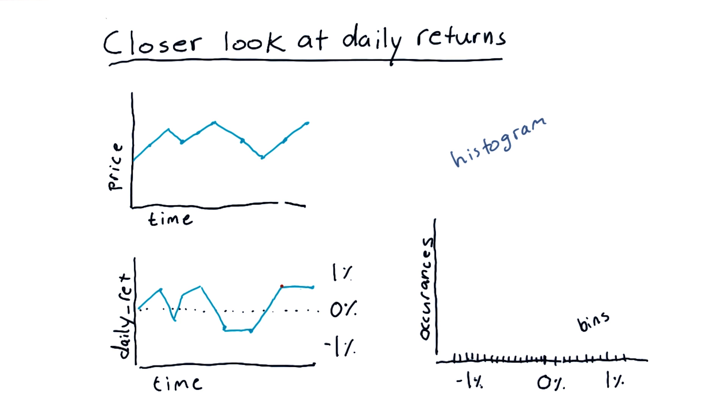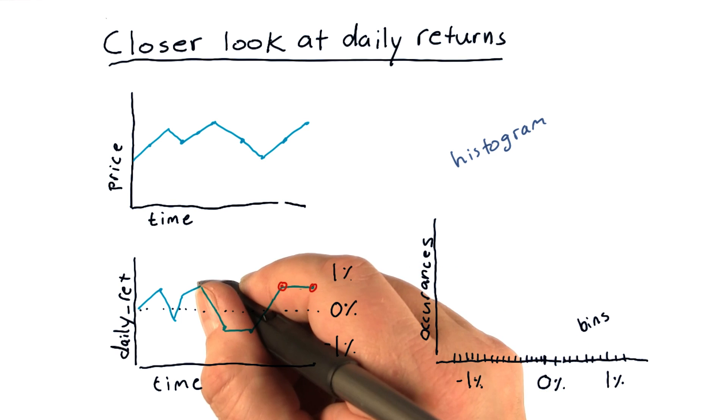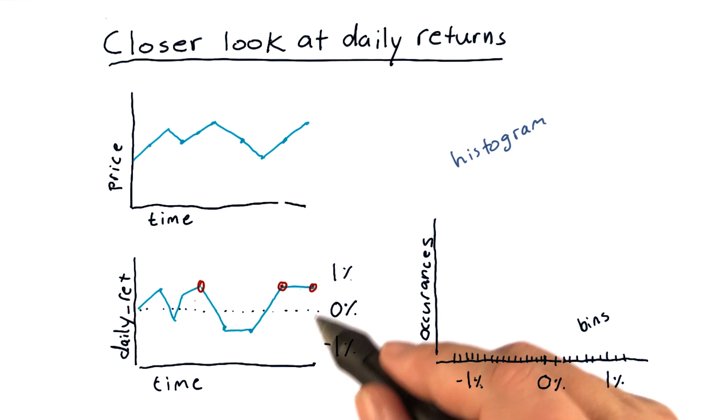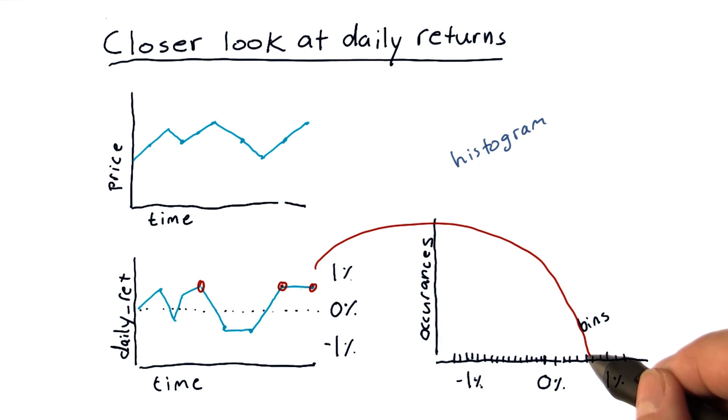So as an example, if you notice here, we've got several occurrences of this value, which is about the same. And those three occurrences are probably in, say, this bin. So when we go to plot the histogram overall, we would see a bar of the appropriate height here that represents how many values, how many times the data match that value.